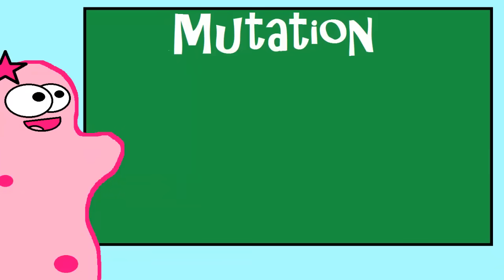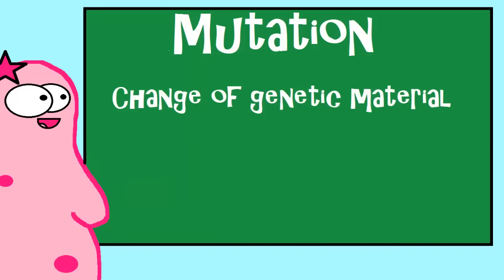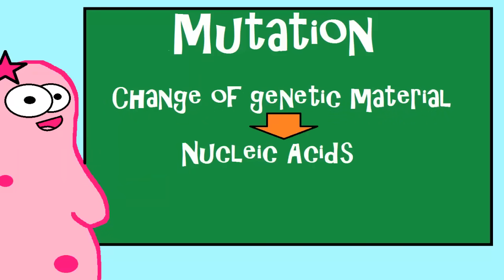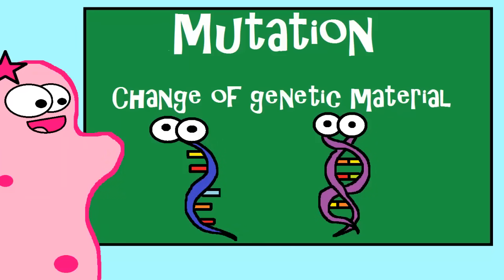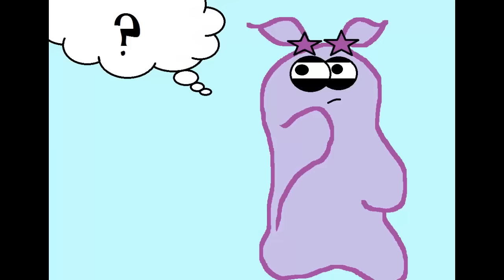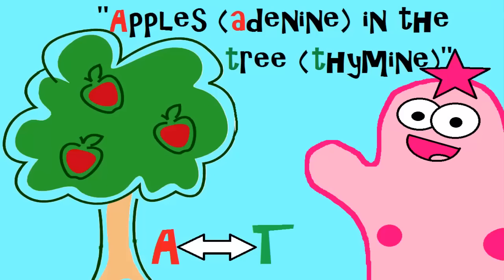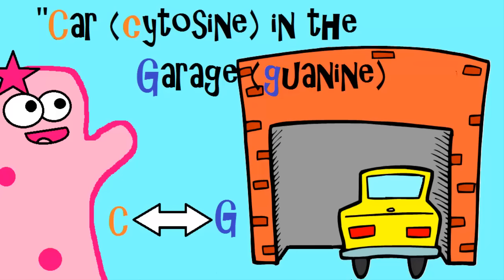Most people understand that a mutation is some kind of change. It is a change of genetic material, and more specifically, a nucleic acid. RNA and DNA are both types of nucleic acids. In DNA, the base adenine (A) goes with the base thymine (T), and the base cytosine (C) goes with the base guanine (G).